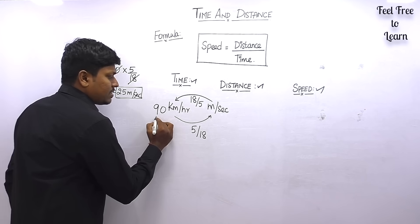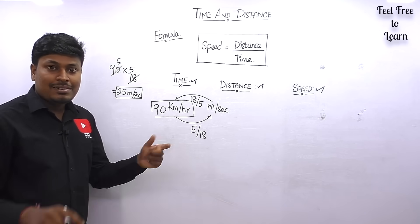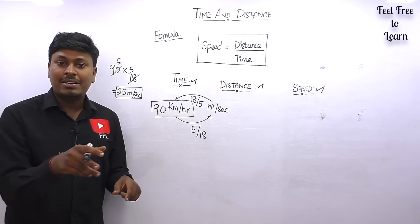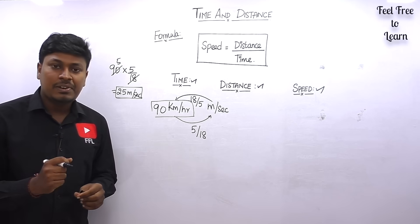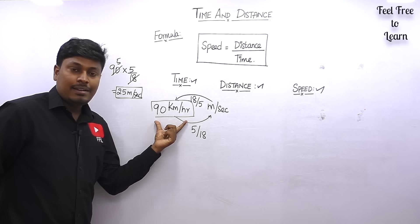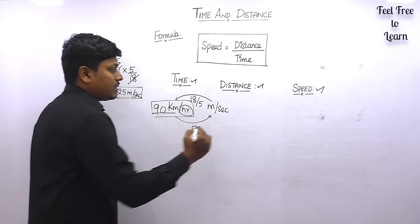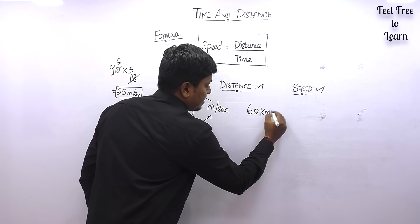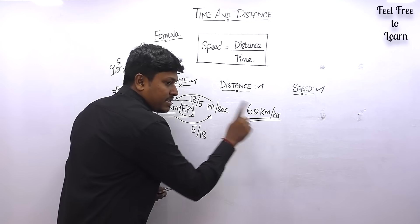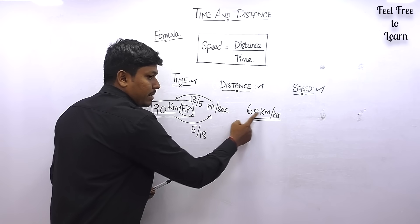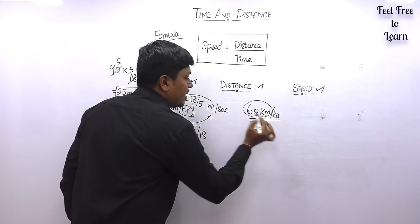The meaning of 90 kilometers per hour is that for one hour you will travel 90 kilometers — just like what you see on a speedometer. Similarly, 60 kilometers per hour means you cover 60 kilometers in one hour. And 60 meters per second means you cover 60 meters in one second. If you travel at 60 km/hr for two hours, you cover 120 km; for three hours, 180 km.